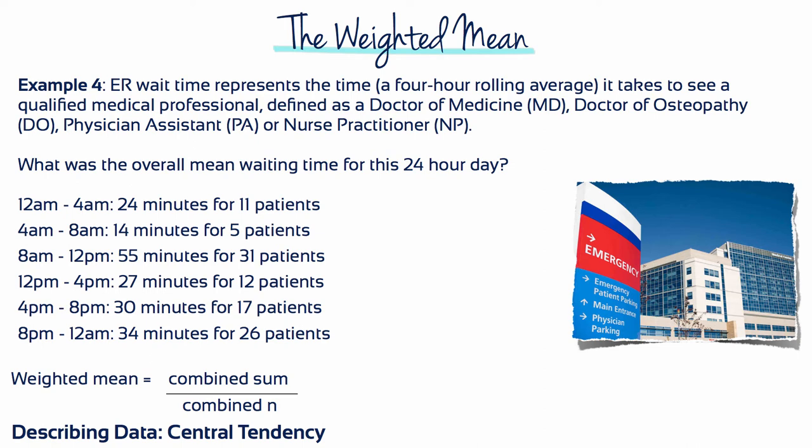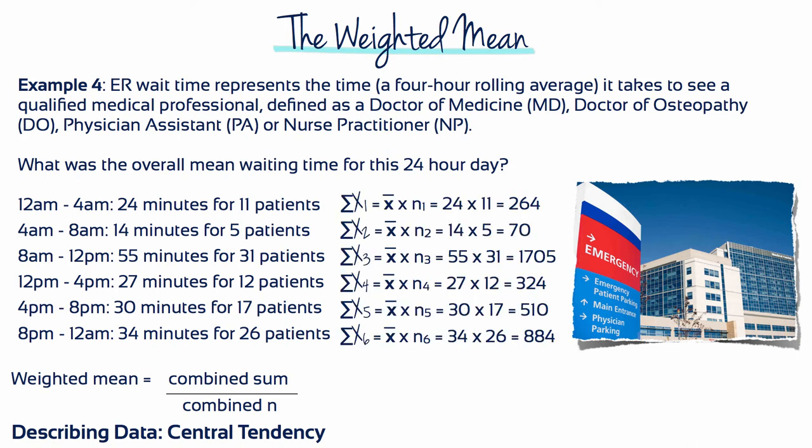24 hours divides into six periods of four hours each. Here are the data listed for those six periods. We first want to calculate the combined sum of scores, so need to figure out sigma x1 through sigma x6. We also need to calculate the total number of patients, so adding together n1 through n6. The weighted mean is the combined sum divided by the combined n, which equals 36.8 minutes.